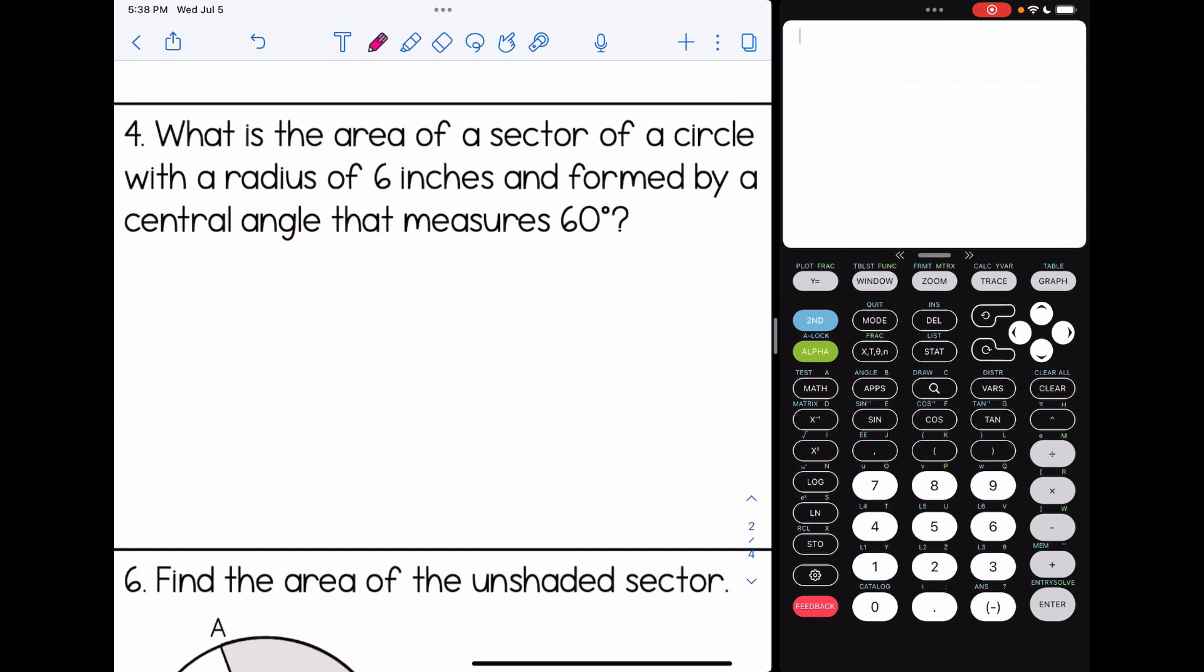All right, number four, what is the area of a sector of a circle with a radius of 6 inches and forms by a central angle that measures 60 degrees? So our area of a sector is equal to our central angle over 360 pi r squared. Again, we are doing this in terms of pi, so no pi in the calculator, and I got 6, so I'm going to put 6 in my answer in front of the pi. Units are squared since we're dealing with area, so 6π inches squared.